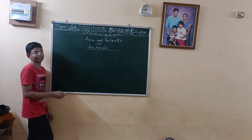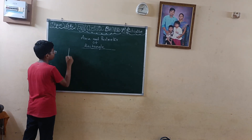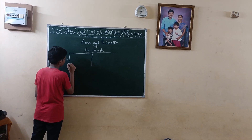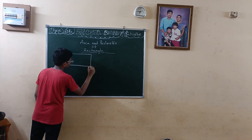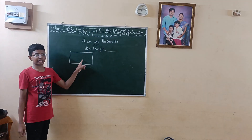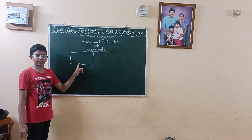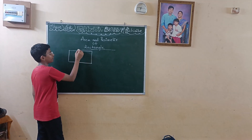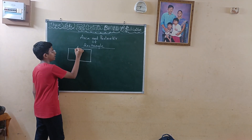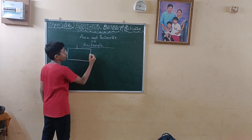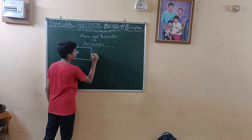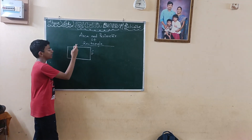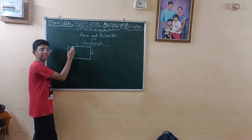Let me take a rectangle diagram. A rectangle is a closed figure. It has 4 sides. This line is recorded as the length, and this line is recorded as the breadth. So opposite sides are equal.